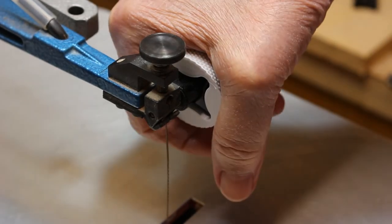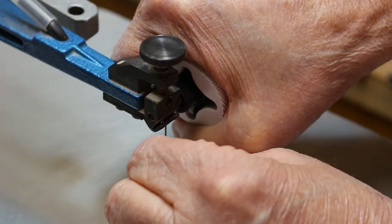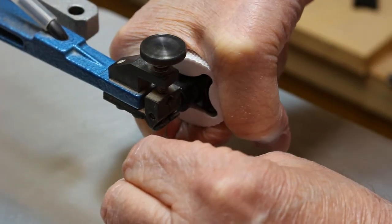Now to tighten or loosen the blade, all you need to do is grab a hold of the big knob, loosen it, take the blade out, put it back in and tighten it.